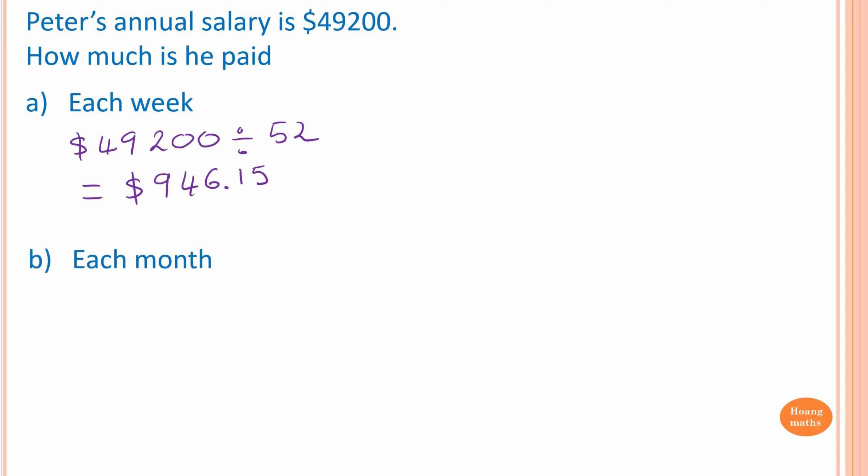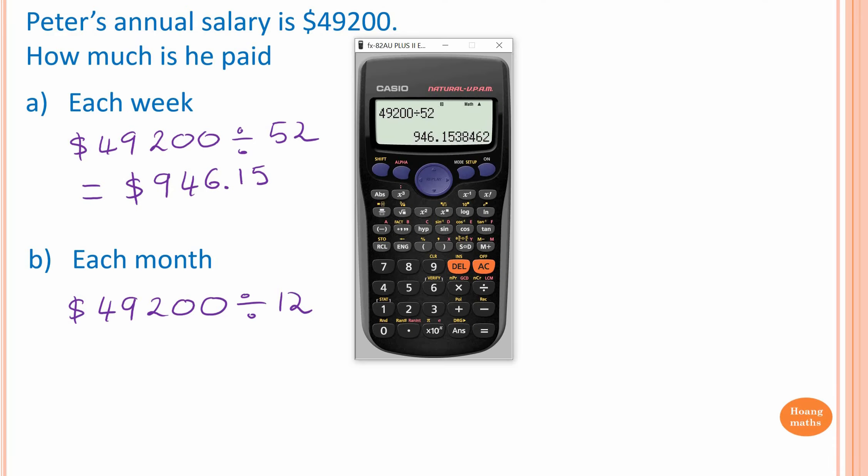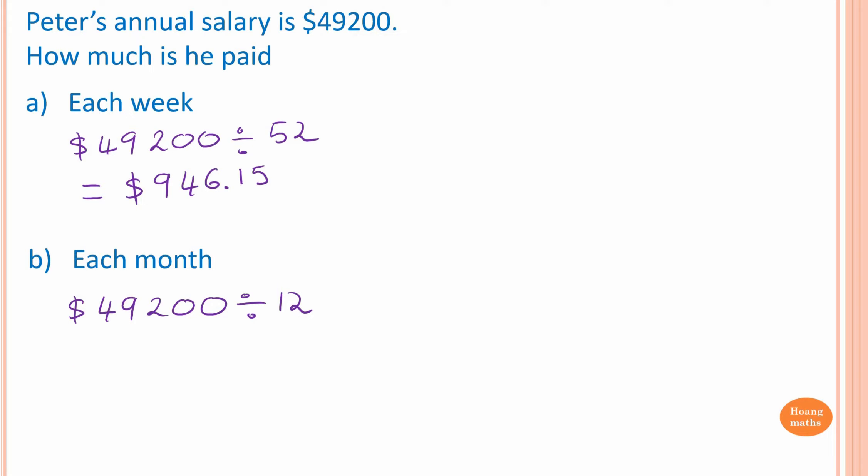Second one, how much is he paid each month? So we know that 12 months is in a year, so we just go $49,200, we divide by 12 because there are 12 months in a year. So $49,200 divided by 12, $4,100.